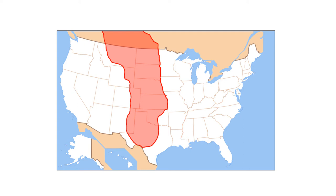Now we're going to talk about the Great Plains. When we're talking about the Great Plains, the region we're talking about is specifically this part right here, going right down through the middle of the United States, down to the Texas-Mexico border, and extending beyond the Canadian border a good ways up into Canada. Generally divided into the Northern Plains and the Southern Plains.